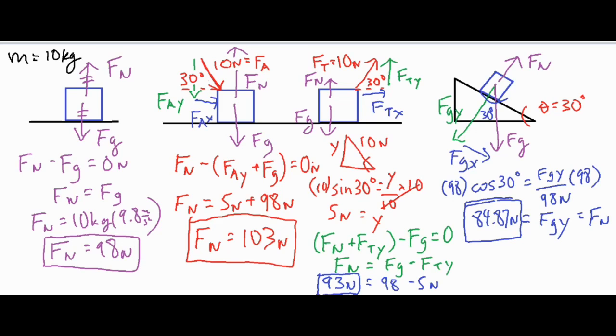Now the reason why it is very closely tied to the force of friction is because the force of friction is the coefficient of kinetic or static friction times the normal force. So in a lot of cases if you solve for the normal force correctly, as long as you can get the mu value, the coefficient of static or kinetic friction, then you can correctly and accurately solve for the force of friction.